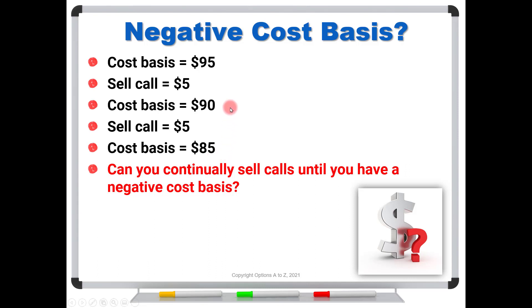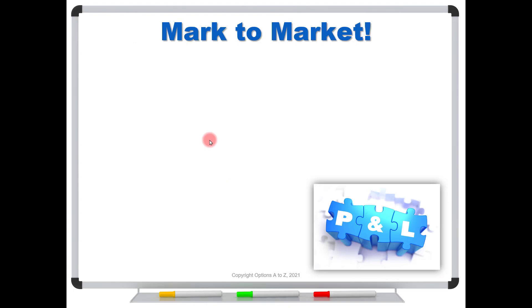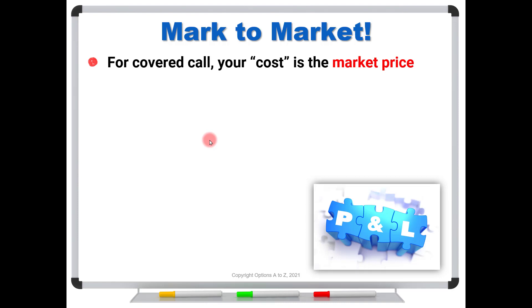A negative cost basis means that you have eventually collected more in option premiums than you've spent on the shares. So if you initially spent a hundred bucks on the stock and have now sold a hundred and five dollars worth of calls, you'd say you've got a negative cost basis of five bucks. Well, is that really true? Like a lot of things with options trading, it depends on how you look at it. For professional traders, they will always use what is called mark to market — marking the position to the current market price. For a covered call, your cost of the shares is the market price.